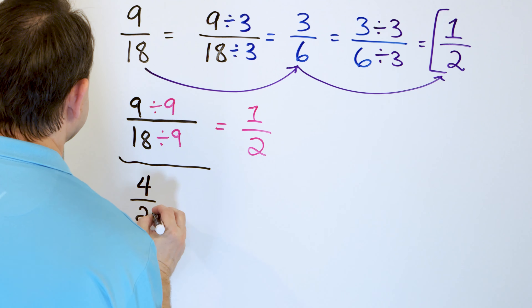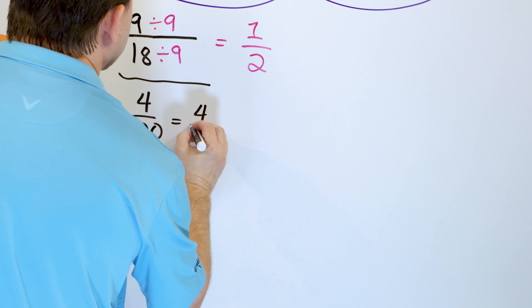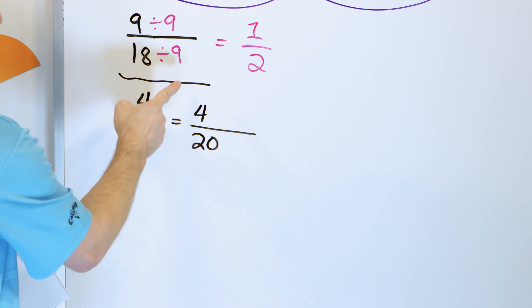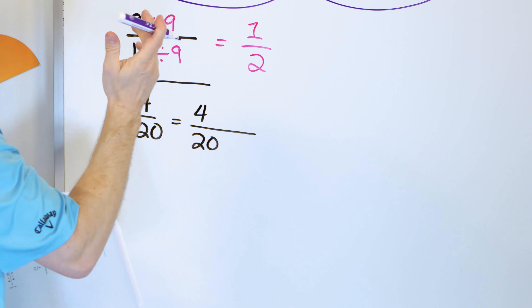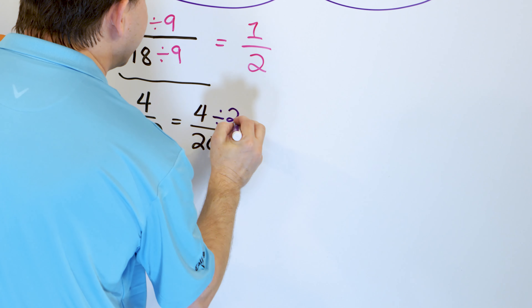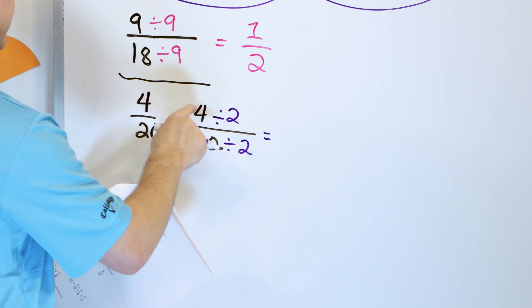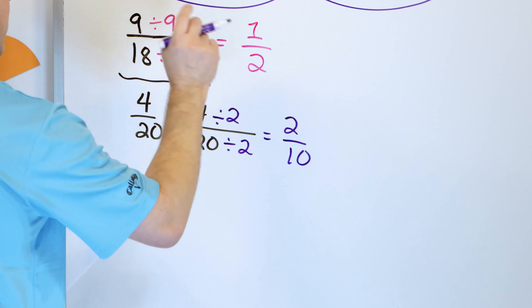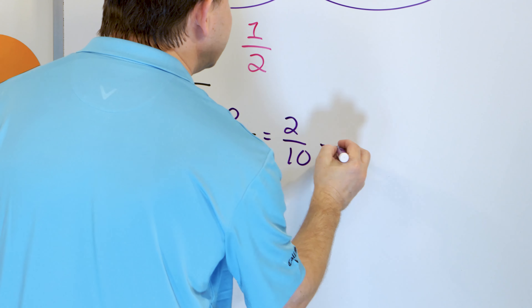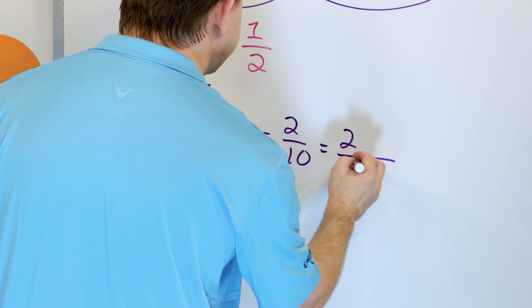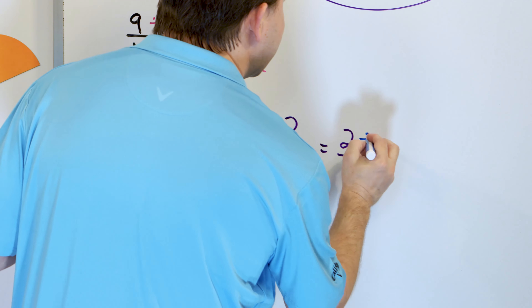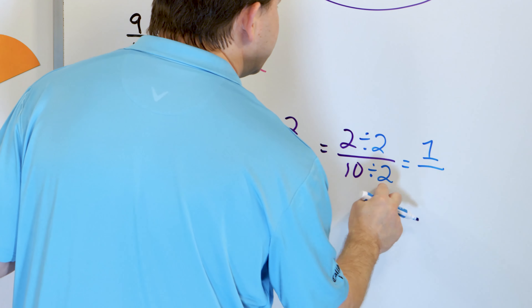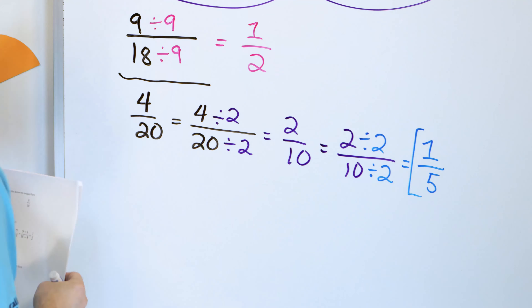What about four-twentieths? I know I could divide by four, but let's say I didn't notice that. I know these are even numbers, so I divide by two and by two. Four divided by two is two, twenty divided by two is ten. But then I notice I can do it again, because two and ten are again even numbers. I write two-tenths down again and divide the top by two and the bottom by two. Two divided by two is one, ten divided by two is five, and the answer is one-fifth.